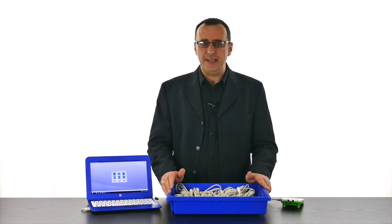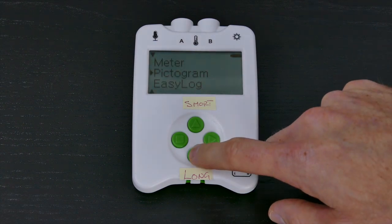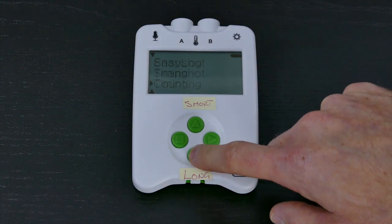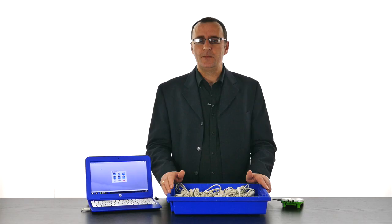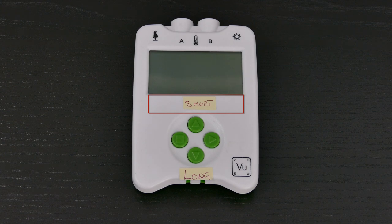Select counting on the VIEW logger. Pop a temporary sticker label on the up arrow that says short, and one on the down arrow that says long.